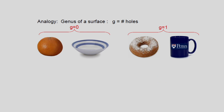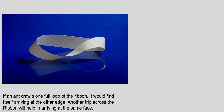Examples: an orange has genus 0; a saucer or plate also has genus 0. A donut or mug handle has genus 1. The genus simply counts the number of holes in the object. There is also the Möbius strip.